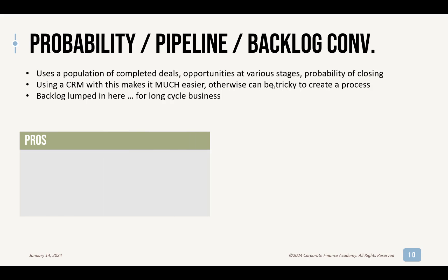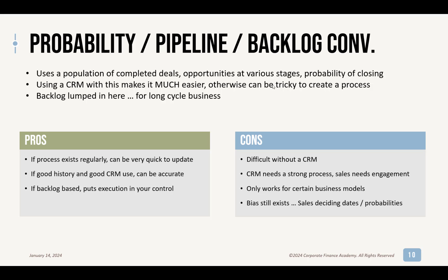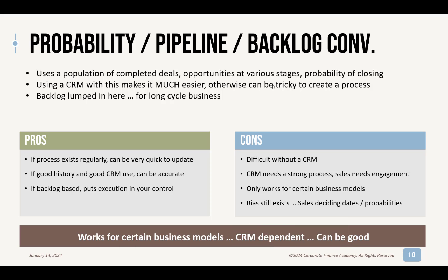The pros: if a process exists regularly, it can be very quick to update. If you have good data history and a good CRM that the sales team actively updates, it can be pretty accurate depending on your business model. And if it's backlog-based, it's really just about execution — if you have enough orders you just go fulfill them, which is nice because the forecast is in your control. Cons: it can be difficult without a CRM. The CRM itself needs a strong process and sales needs to be very engaged and regularly updating. It only works for certain business models, and bias still exists — the sales team is deciding the dates and probabilities for when deals will close. Summary: this works for certain business models; it's very CRM-dependent but can be good.